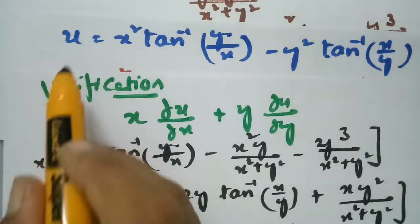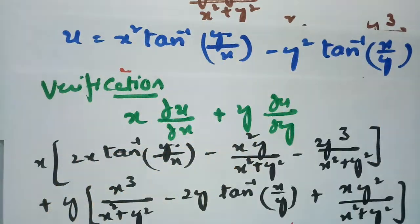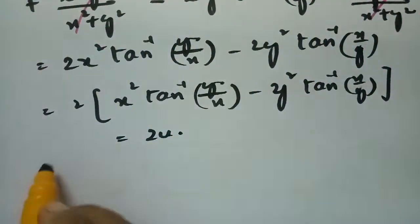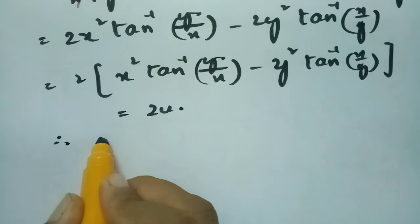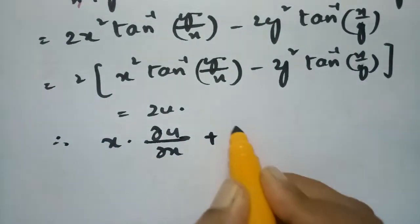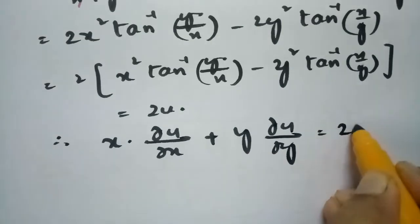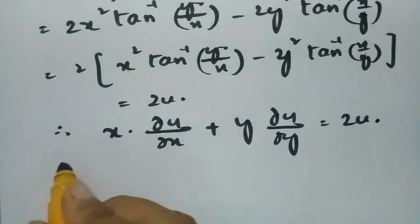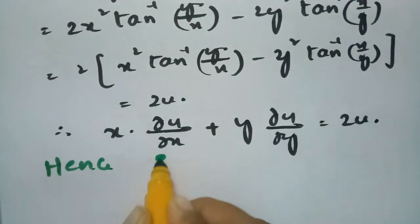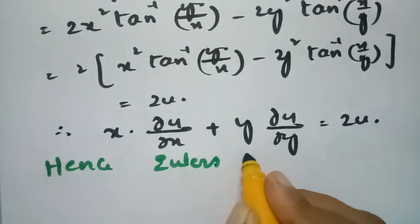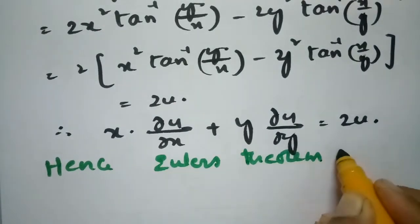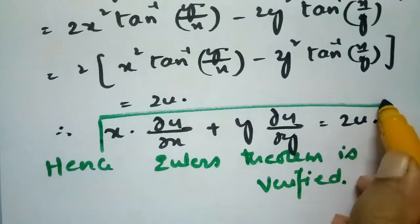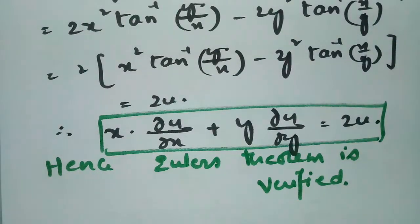Taking 2 common: 2 times x square tan inverse of y by x minus y square tan inverse of x by y, which is nothing but 2u. Therefore x·(∂u/∂x) + y·(∂u/∂y) equals 2u. Hence Euler's theorem is verified.